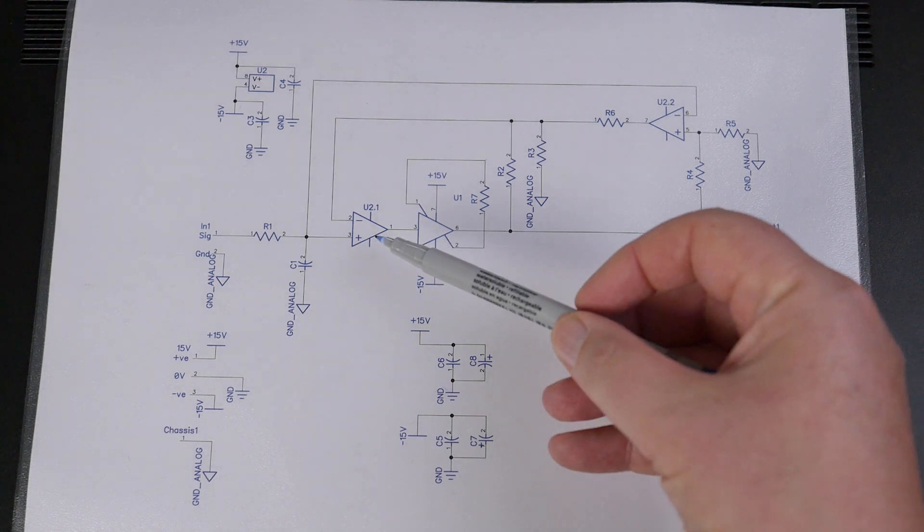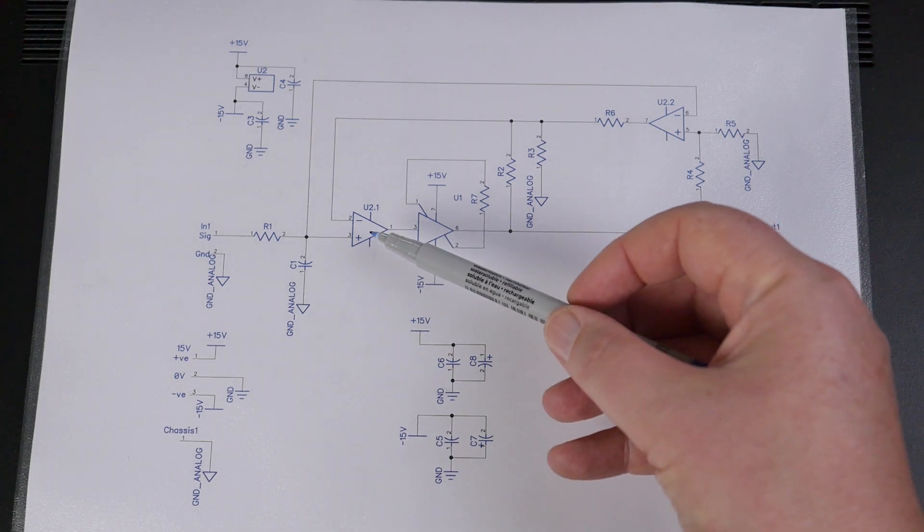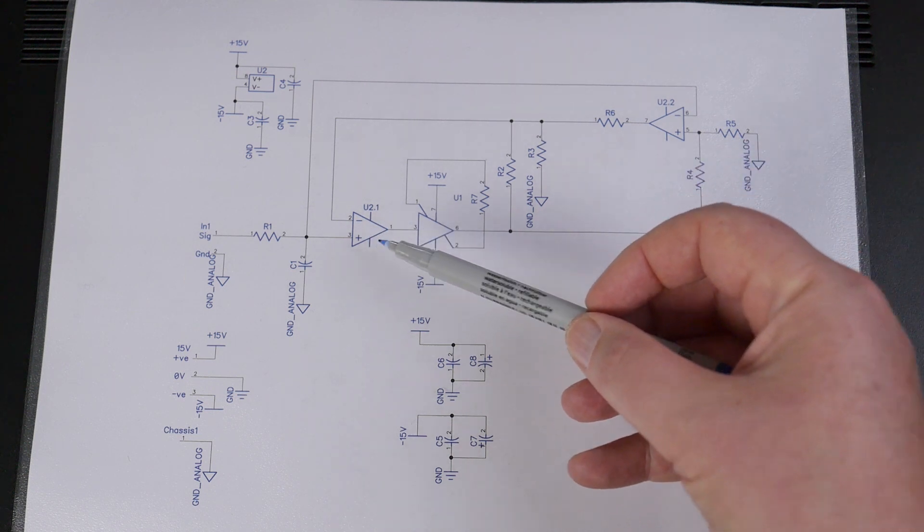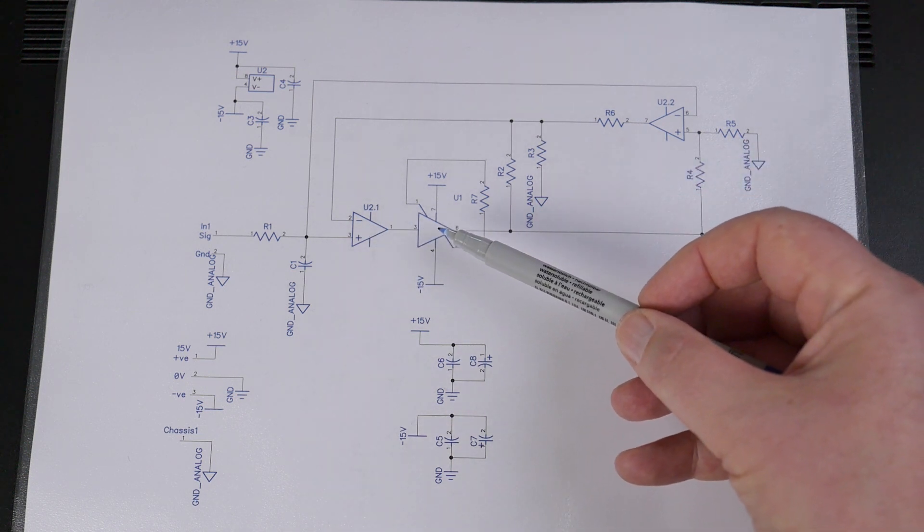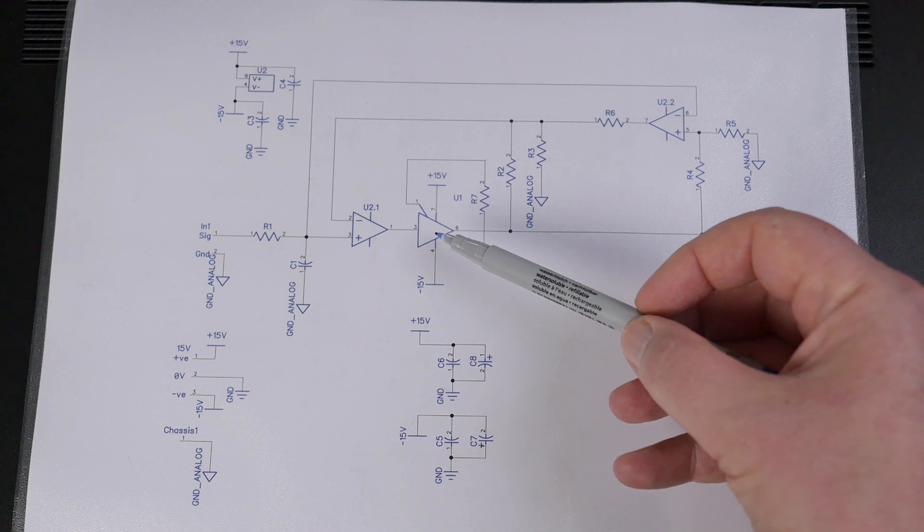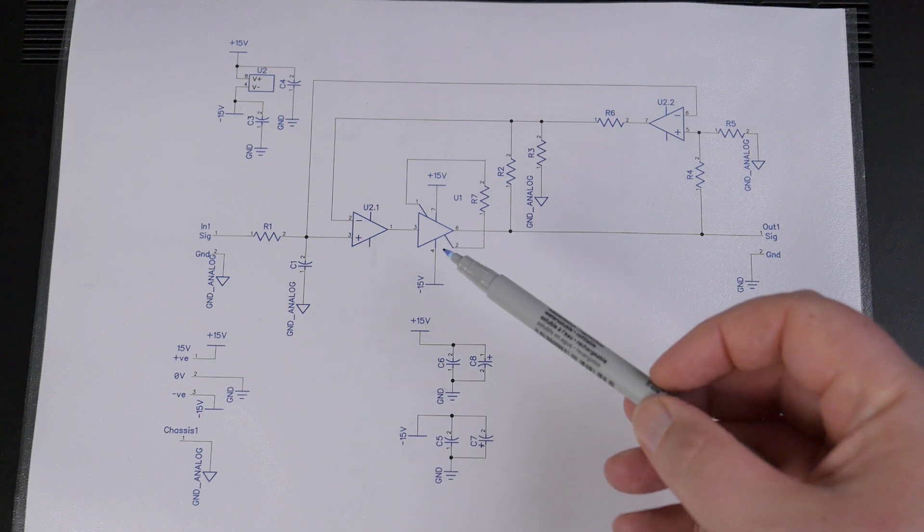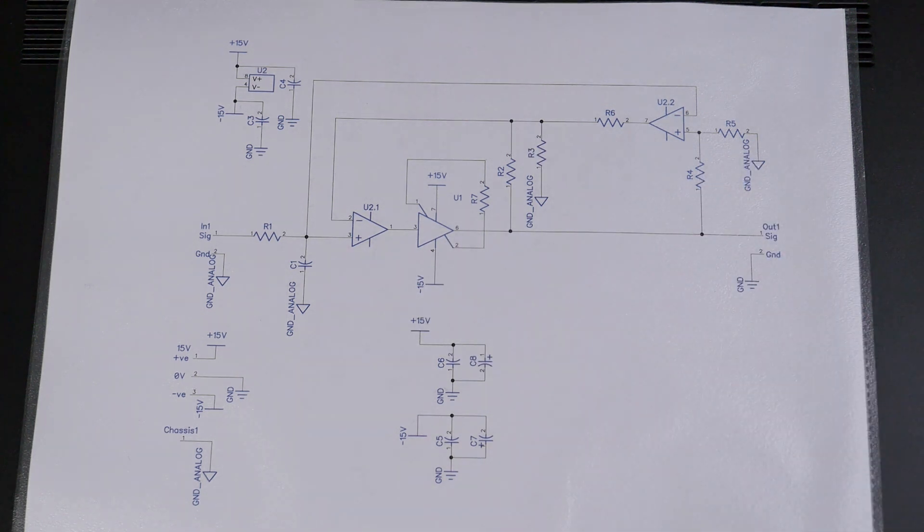In this case is the LM4562 which is a lovely op amp but has limited output current capability. And this is a BUF634, a unity gain buffer with plenty of bandwidth but slightly dodgy distortion characteristics. So the two of those, match made in heaven.